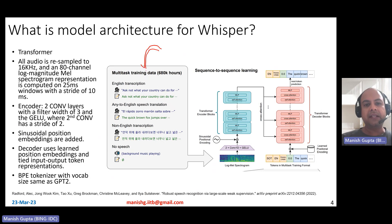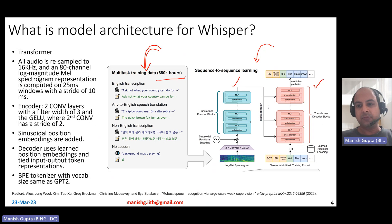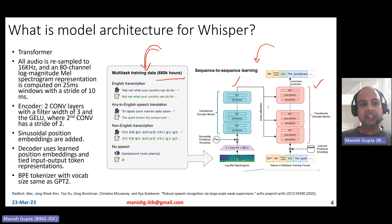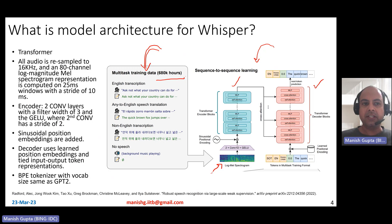Now that you have this multilingual pre-training data — 680,000 hours — what is the model architecture for Whisper? Whisper is a transformer model with an encoder and a decoder. The encoder has self-attention and feed-forward layers; the decoder has self-attention, cross-attention, and feed-forward layers. The audio input is resampled to 16 kHz, and an 80-channel log-magnitude mel-spectrogram is computed on 25-millisecond windows at a stride of 10 milliseconds, so for a 30-second clip you stride a 25-millisecond window every 10 milliseconds and compute a log-mel spectrogram with 80 channels.